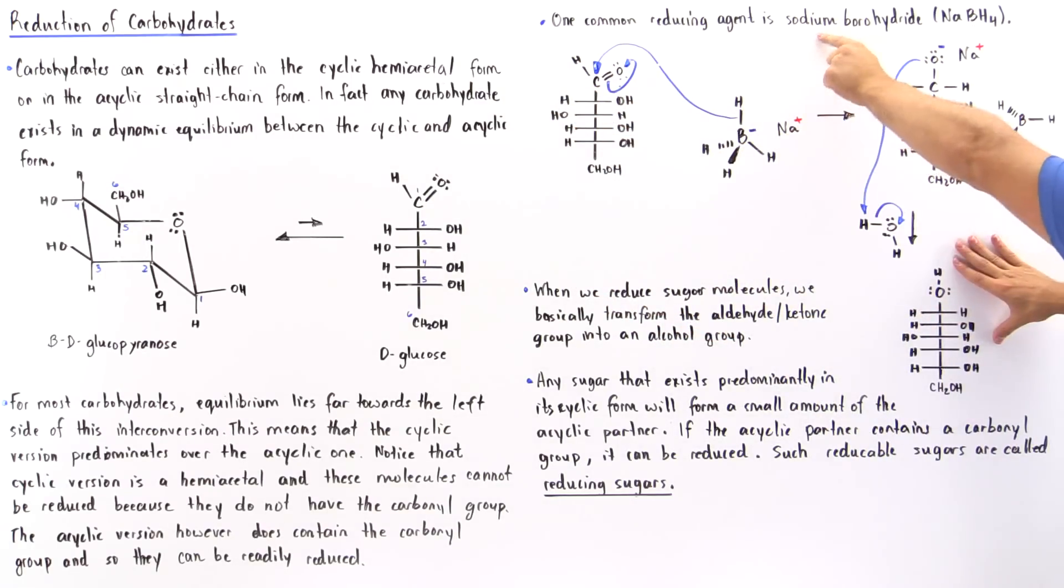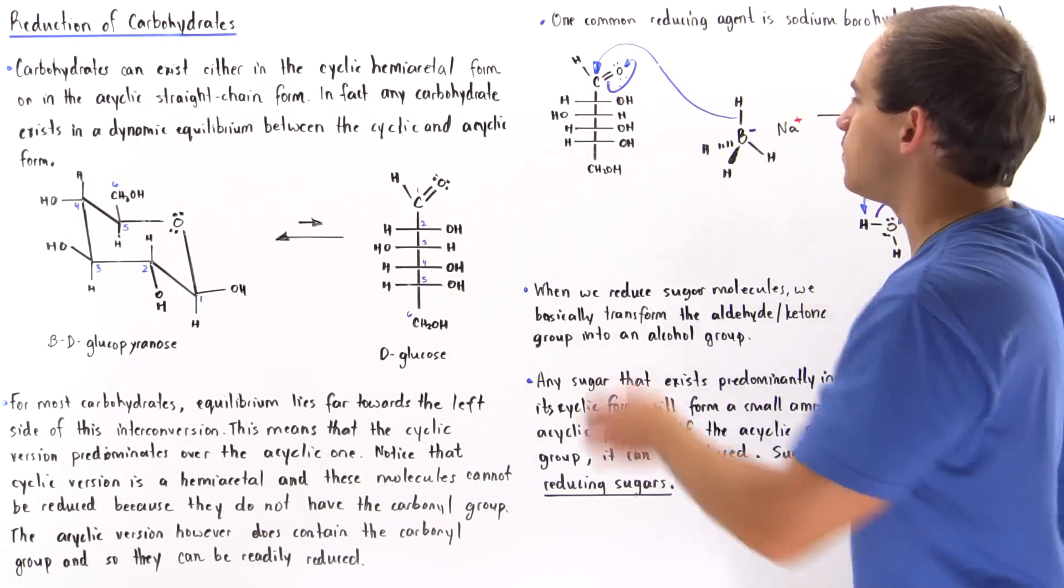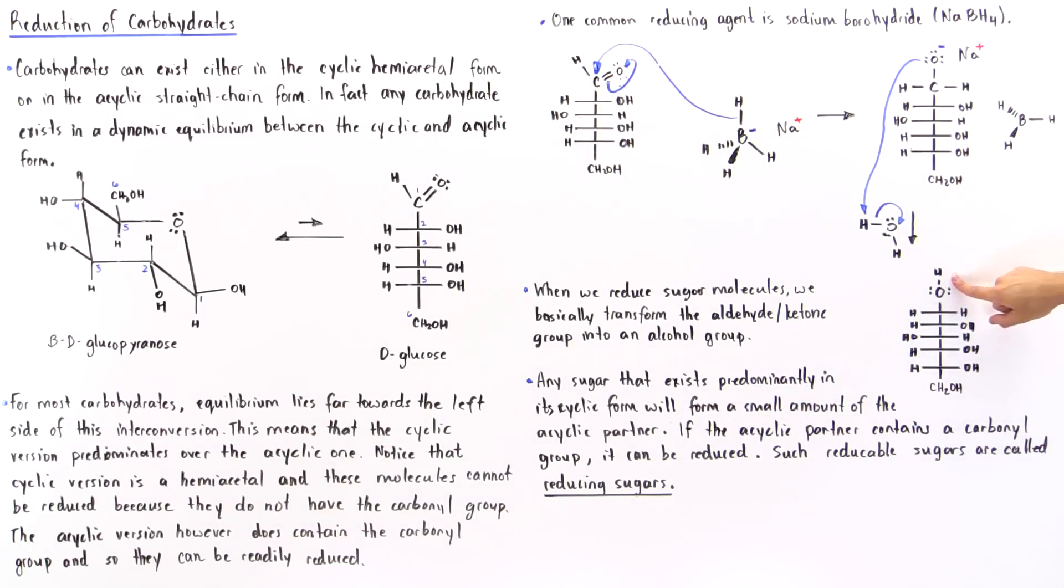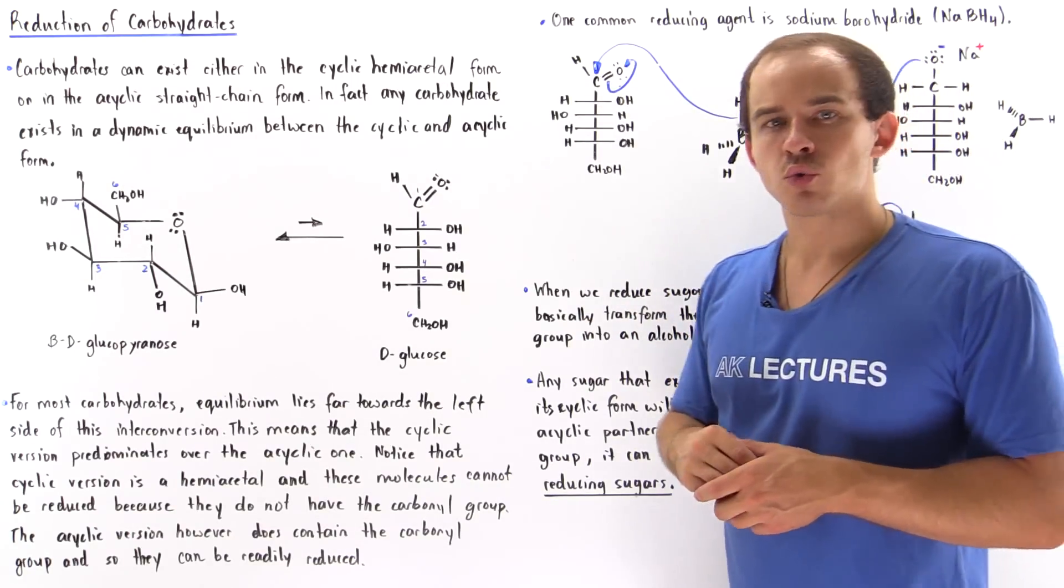Basically, we take our reducing sugar, mix it with sodium borohydride, and produce our reduced product in which this carbon-oxygen double bond, the carbonyl group, has been transformed into our alcohol. So we see that when we reduce sugar molecules, we basically transform an aldehyde, or a ketone group in the case of ketoses, into an alcohol group.